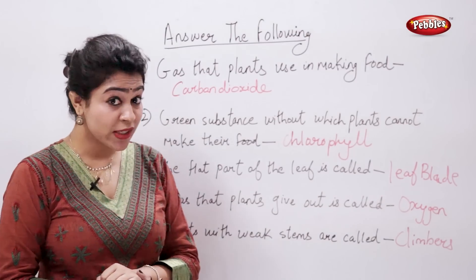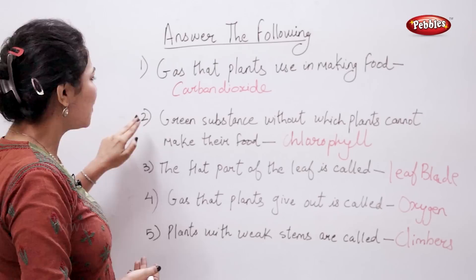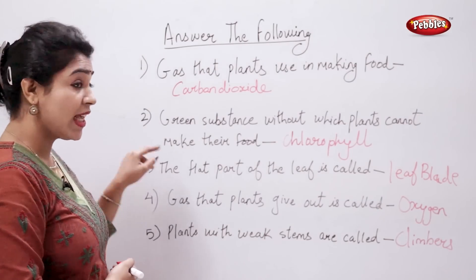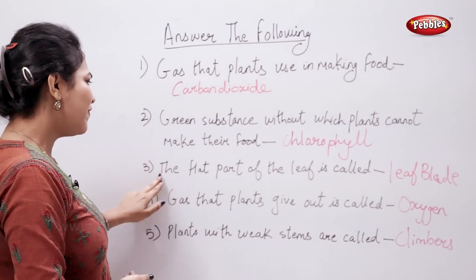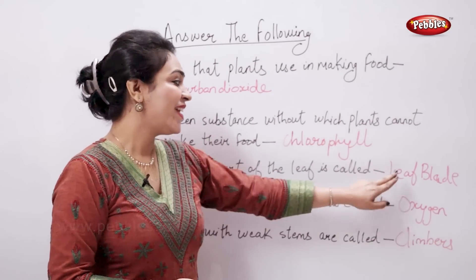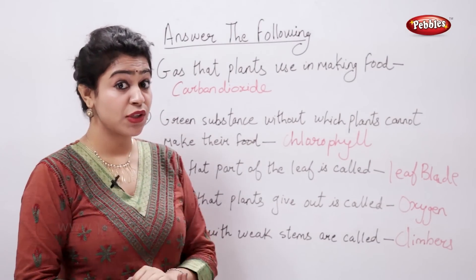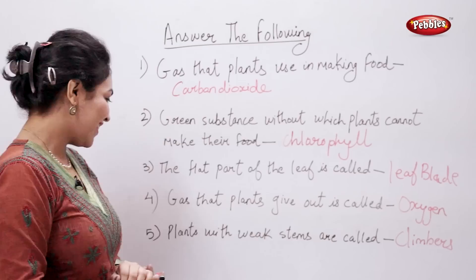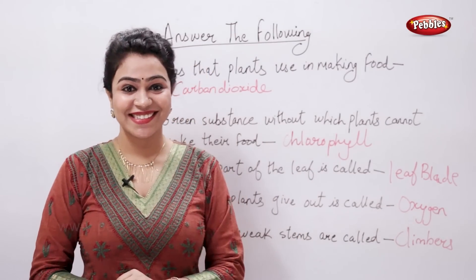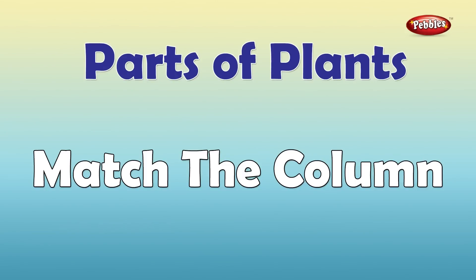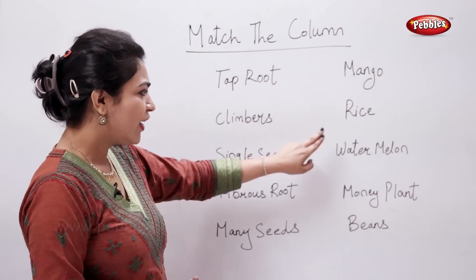To recap: the gas that plants use in making food is carbon dioxide, the green substance without which plants cannot make their food is chlorophyll, the flat part of the leaf is called the leaf blade, the gas that plants give out is oxygen, and plants with weak stems are called climbers. Now, match the column — give me an example of a taproot.